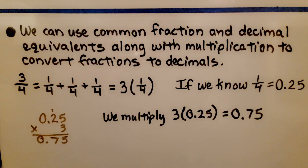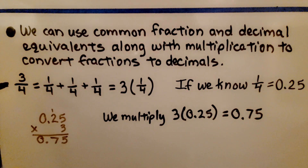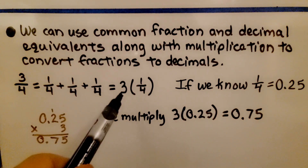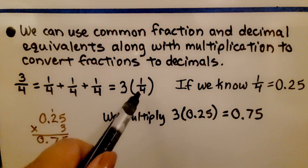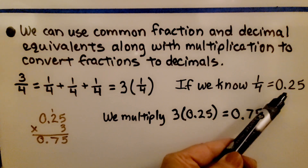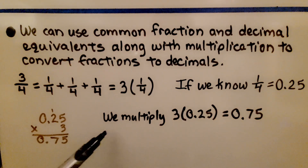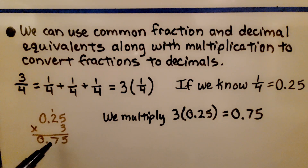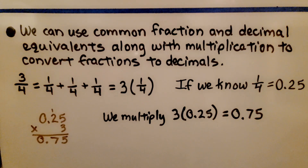We can use common fraction and decimal equivalents along with multiplication to convert fractions to decimals. If we need to convert 3 fourths to a decimal, we think that's 3 times 1 fourth. If we know that 1 fourth is 25 hundredths, we just multiply 3 times 25 hundredths and get 75 hundredths. So 3 fourths as a decimal is 75 hundredths.